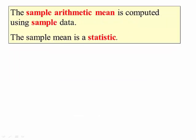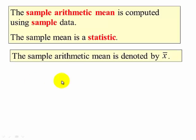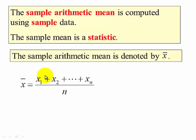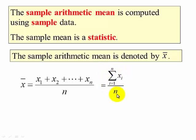The sample mean is computed by using sample data. The sample mean is a statistic, denoted by x-bar. The formula is the same: we add up all the observations in the sample and divide by the number in the sample. Note that lowercase n denotes the number of observations in the sample, while capital N is the number of observations in the population.